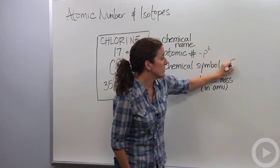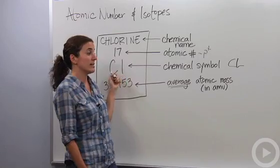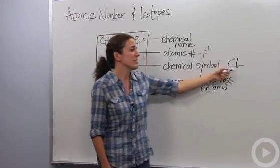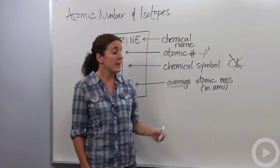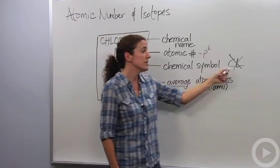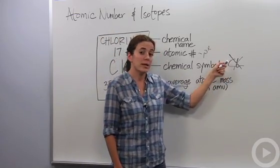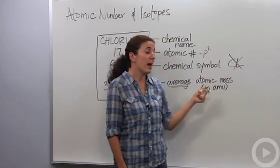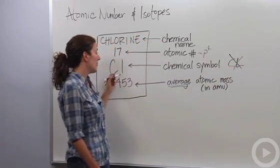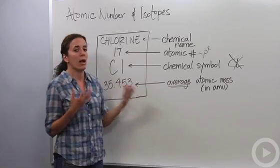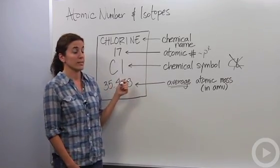One thing I see students do a lot is instead of making it a lowercase l for the second letter, they keep both letters capitalized. This is completely incorrect. As a chemist, when I see CL like that, I see two separate elements: C and L — when I know you meant Cl with a lowercase l. So anytime you have a chemical symbol with two letters, make sure the second letter is lowercase.